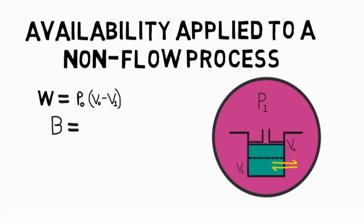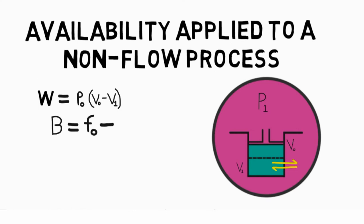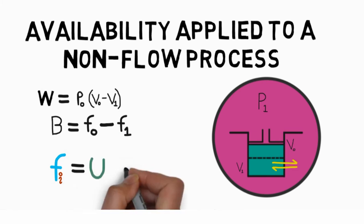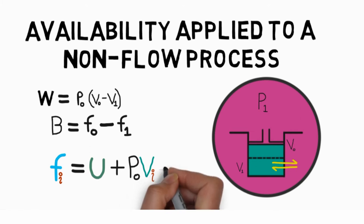Availability in such cases is the difference between F0 and F1, where F is equal to internal energy at the state added to the product of final pressure and the state volume and the product of T0P0 with entropy of that state subtracted from it.